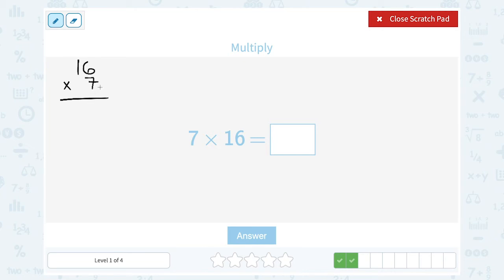So first, I'm going to say, what is seven times six? That's 42, so I'm going to write the two and bring the four over. And then I have to say, what is seven times one? Well, seven times one is seven, and then I still have to add that extra four, which gives me 11. So I'm going to wind up with 112.